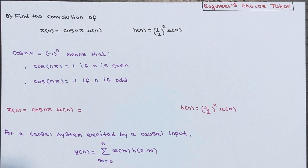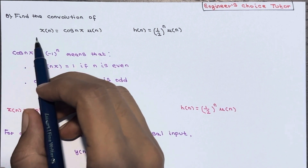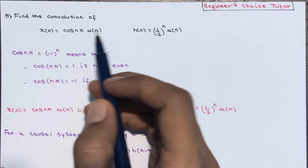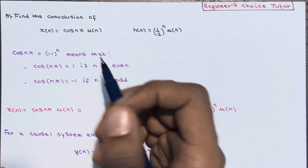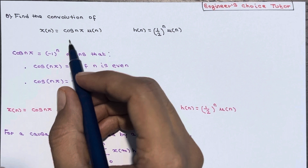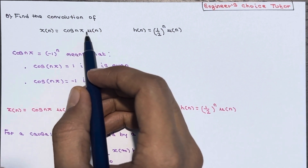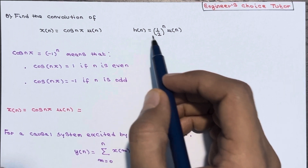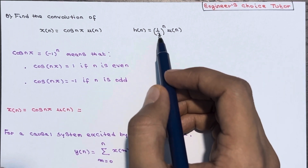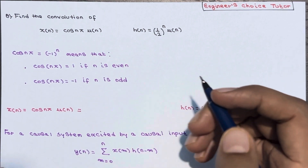Hi everyone. In this lecture we will find the convolution of x(n) and h(n). x(n) is given as cos(nπ) · u(n) and h(n) is given as (1/2)^n · u(n).